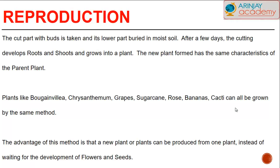Plants like bougainvillea, chrysanthemum, grapes, sugarcane, rose, bananas, and cacti can all be grown by this method. The advantage of this method is that a new plant or plants can be produced from one plant instead of waiting for the development of flowers and seeds.